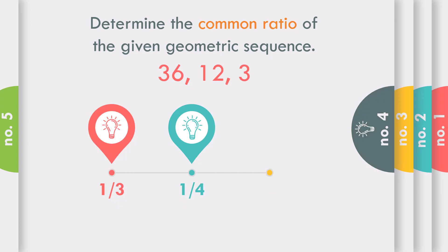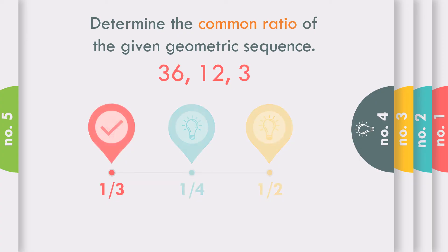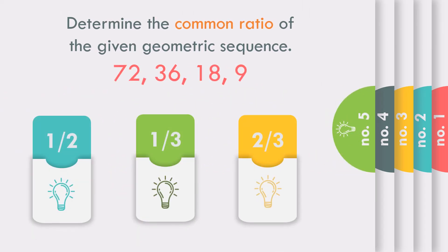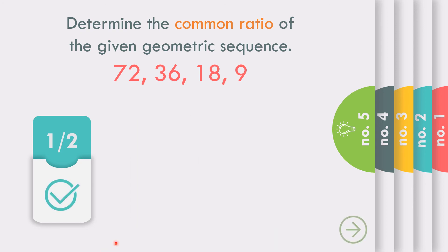How about number 4 in the sequence 36, 12, and 3? What is the common ratio? The answer is 1/3. And number 5: 72, 36, 18, and 9 — what is the common ratio? The answer is 1/2, because 9 divided by 18 in lowest terms is 1/2; or 18 divided by 36 is also 1/2; or 36 divided by 72 in lowest terms is also 1/2.